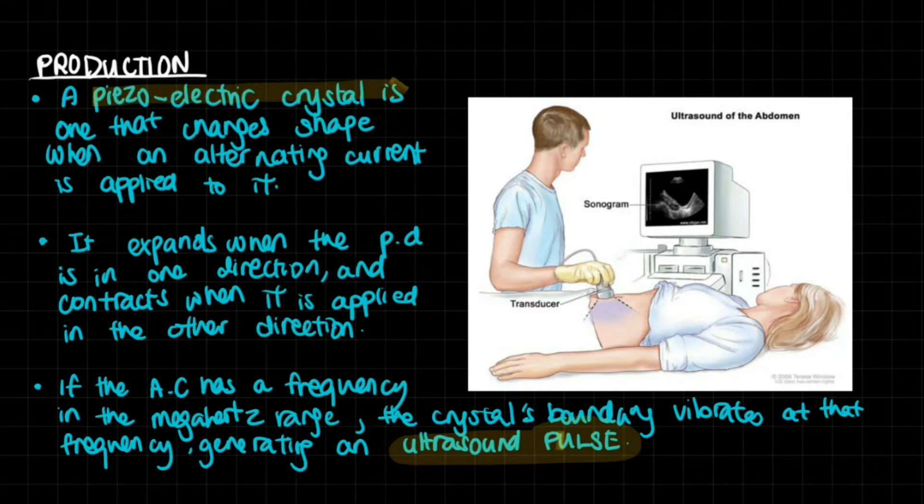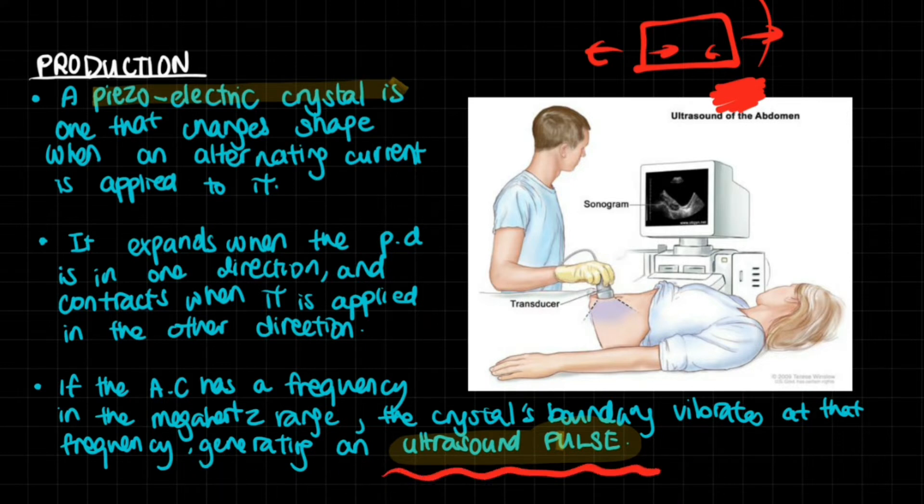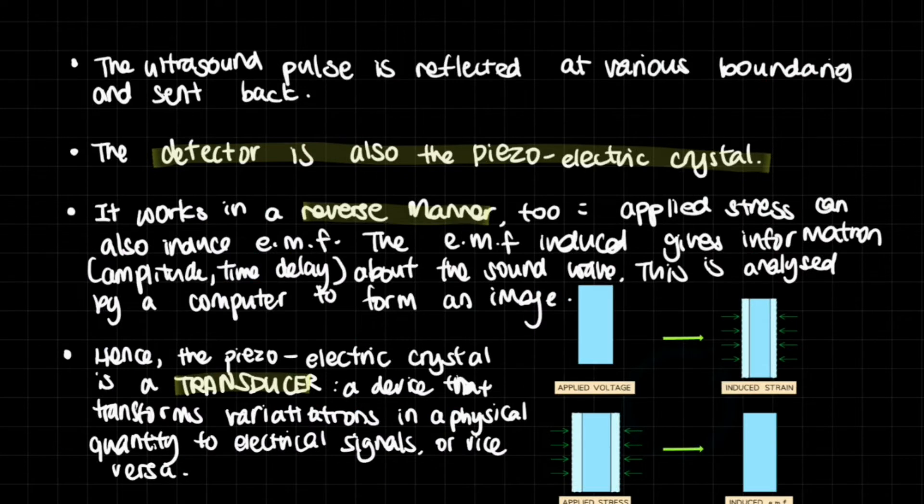If you look at the boundary itself - let's say you have the crystal here expanding and contracting - if you only look at this boundary, it's vibrating extremely quickly, and this generates an ultrasound pulse. An ultrasound pulse is merely sound waves, which are just differences in pressures of air. This vibration creates differences of pressure, which is a sound wave.